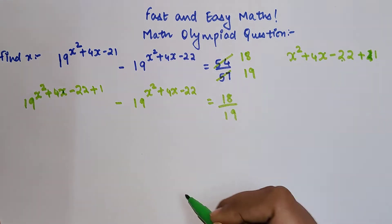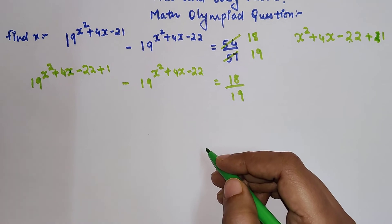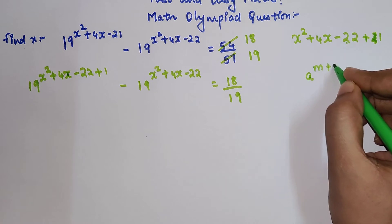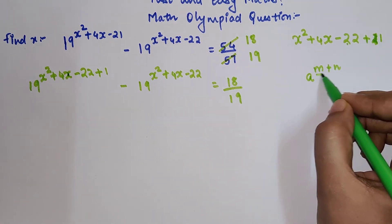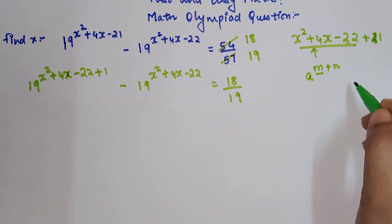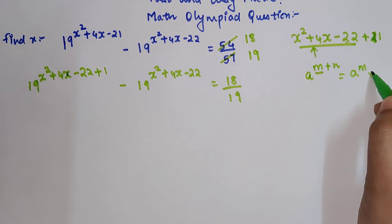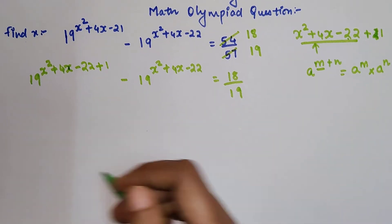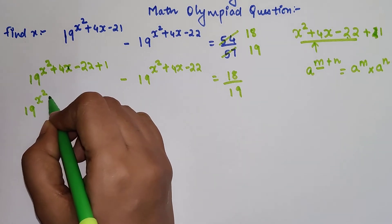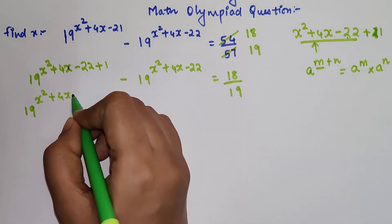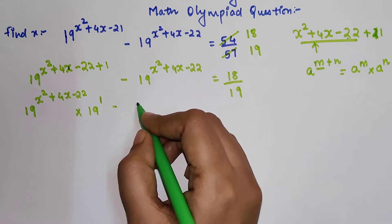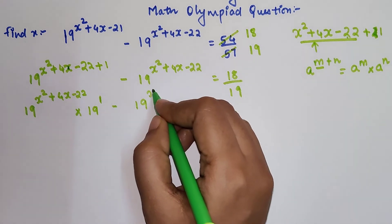Now, next step. Please understand, when you have a^(m+n), you can write this as a^m × a^n. Similarly, I can write this as 19^(x²+4x-22) × 19^1 - 19^(x²+4x-22) = 18/19.